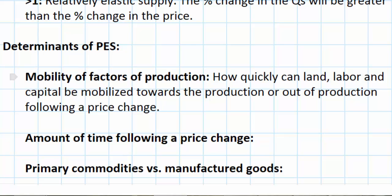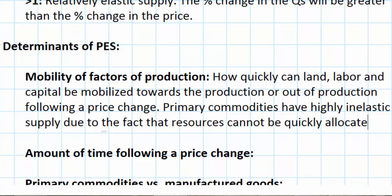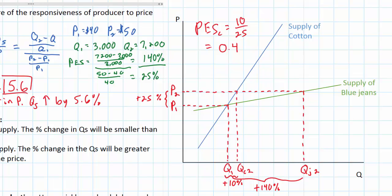However, cotton is a very different story. Primary commodities such as cotton and other raw materials that are mined or grown tend to have highly inelastic supply curves in the short run, due to the fact that resources cannot be quickly allocated towards their production. If the price of cotton rises tomorrow by 25%, how quickly can cotton producers increase their production? You can't simply have workers stay longer hours at the factory and operate on weekends and expect to produce more cotton. Cotton is a crop that is planted and months later it is harvested, so cotton farmers cannot quickly plant and harvest new cotton in the short time following a price change.